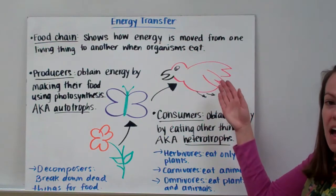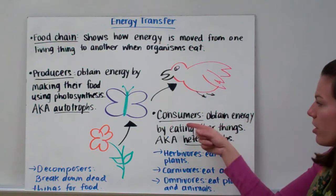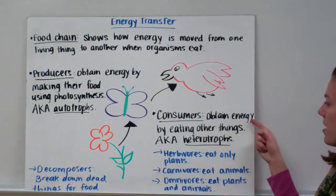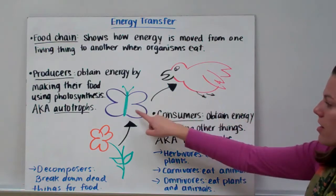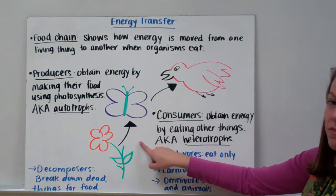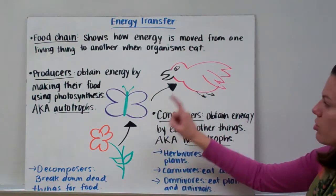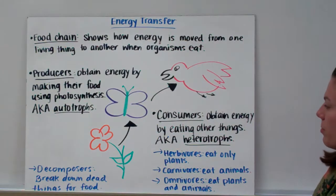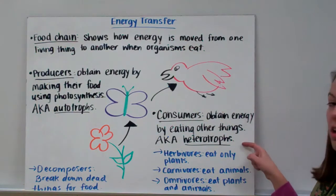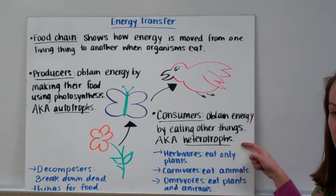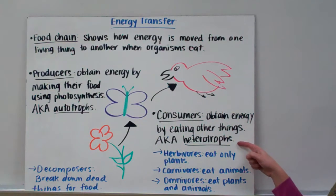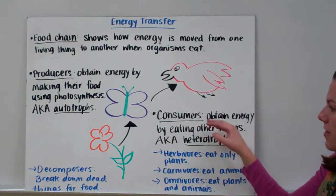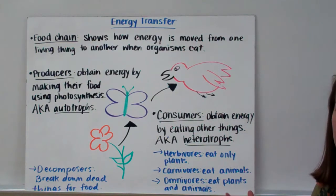Organisms that have to eat food in order to survive are called consumers. Consumers obtain energy by eating other things. This butterfly eats a flower, so it's a consumer. And this bird eats a butterfly, so it's also a consumer. There's another word for consumer: it's called heterotroph. A heterotroph is the same thing as a consumer — they just eat other living things.